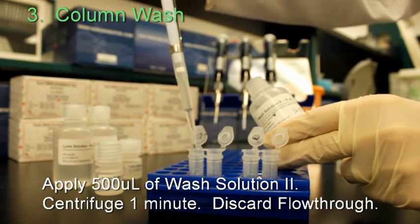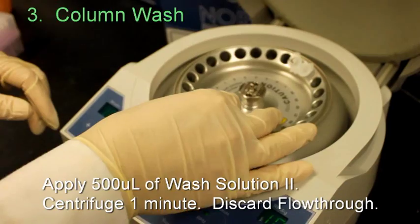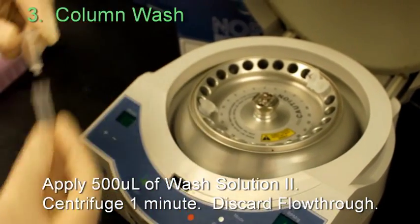Apply 500 microliters of WASH-2 to each column. Centrifuge for 1 minute and discard the flow-through.